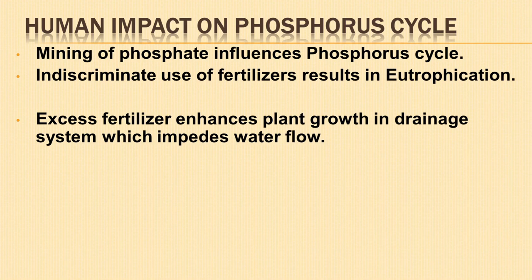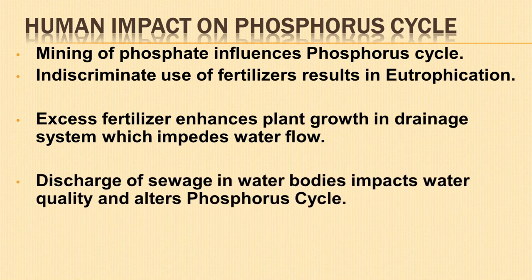The discharge and drainage of sewage from agricultural land contain various phosphate compounds. It affects water bodies and the life of microbes, resulting in the death of aquatic plants and animals and also degrades the quality of water bodies, therefore altering the phosphorus cycle.